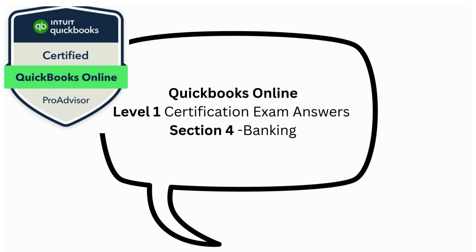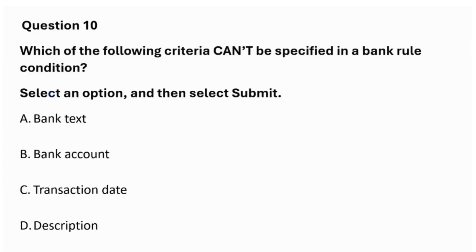Exam question: Which of the following criteria can't be specified in a bank rule condition? Select an option and then select Submit. A: Bank text. B: Bank account. C: Transaction date. D: Description. The answer is C: Transaction date.